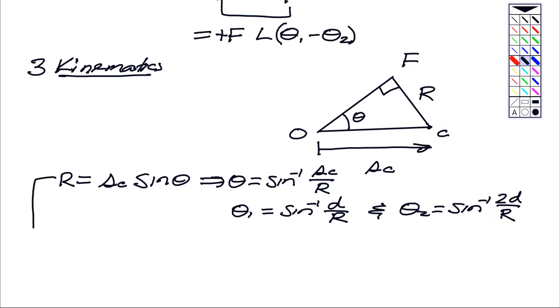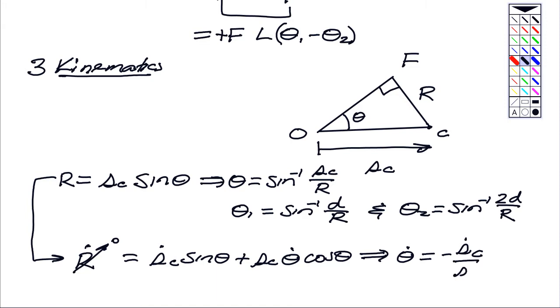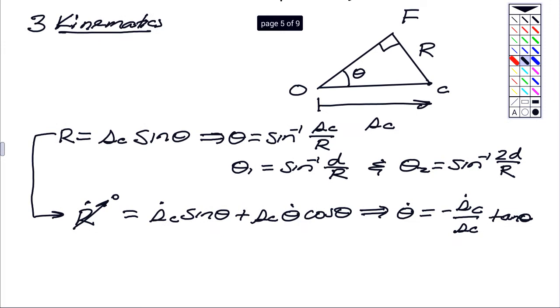I can take that same kinematics equation and do a time derivative. So R dot, which is, of course, equal to 0, is SC dot sine theta plus SC times theta dot cosine. And so therefore, from there, I can say that theta dot is equal to minus SC dot divided by SC times tangent of theta. In other words, this is the expression for omega OA.